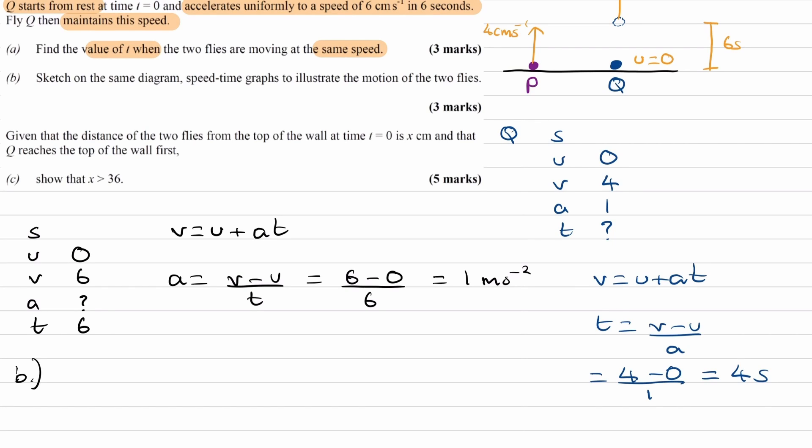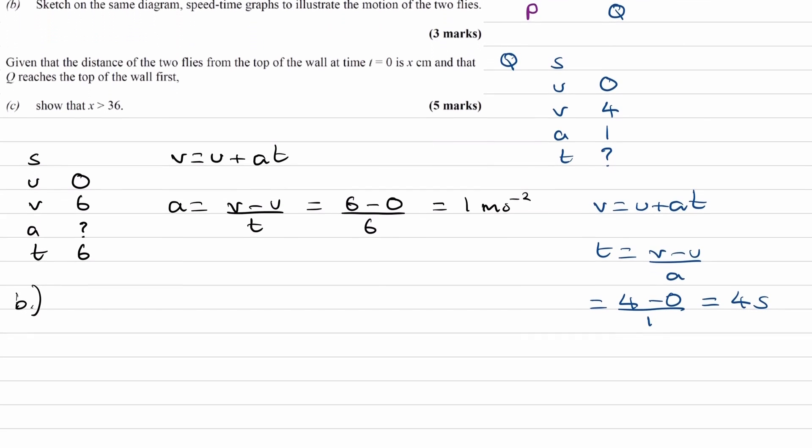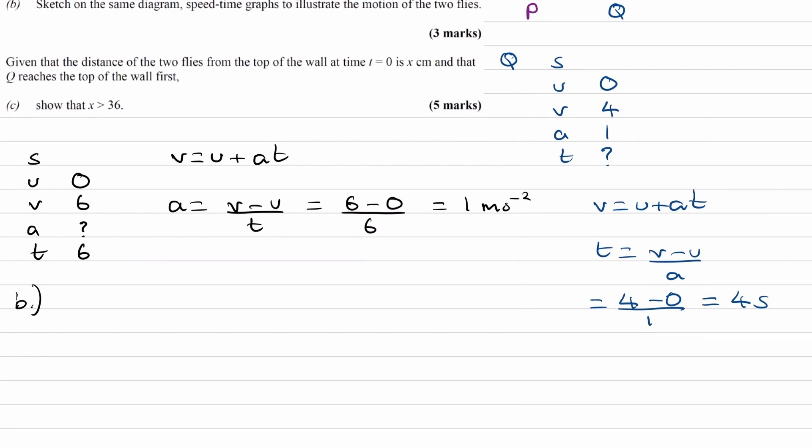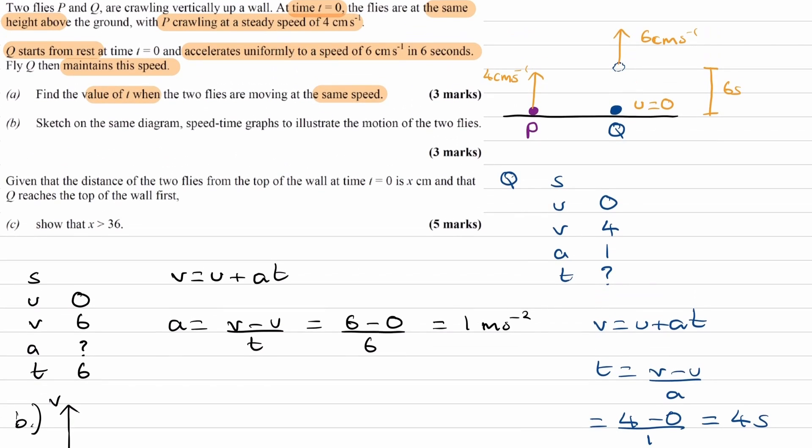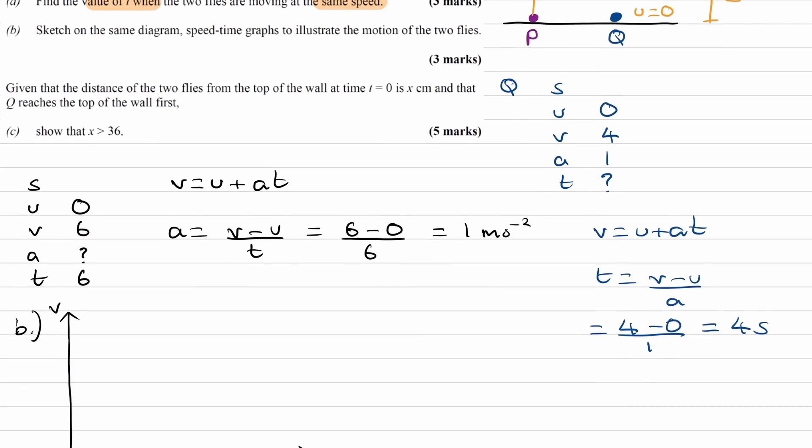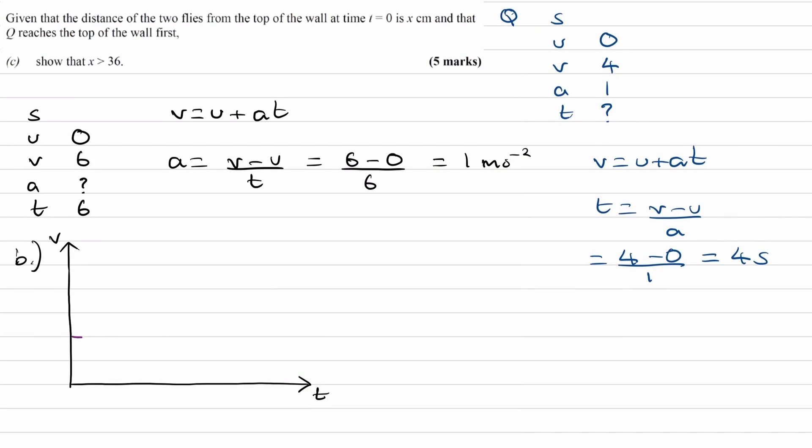Okay, part B. Sketch on the same diagram, speed-time graphs, to illustrate the motion of the two flies. Right, so let's draw out a velocity-time graph. So let's start with P. So P is moving at a constant speed of 4 centimeters per second. So that's all we have here. This is 4. The units for V are centimeters per second. Time is in seconds.